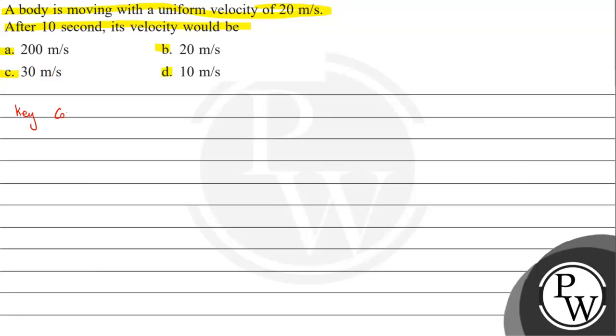Basically, the term uniform represents constant. So it's called constant velocity. A body moving with constant velocity is called uniform motion. Uniform velocity means the body is moving with constant velocity.